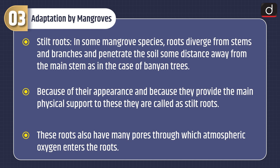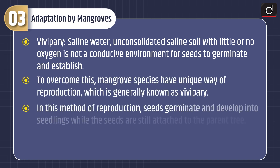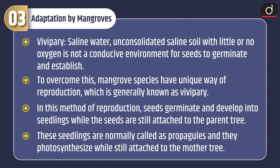These roots also have many pores through which atmospheric oxygen enters the roots. Vivipary: saline water and unconsolidated saline soil with little or no oxygen is not a conducive environment for seeds to germinate and establish. To overcome this, mangrove species have a unique way of reproduction, which is generally known as vivipary. In this method, seeds germinate and develop into seedlings while still attached to the parent tree. These seedlings are normally called propagules and they photosynthesize while still attached to the mother tree.